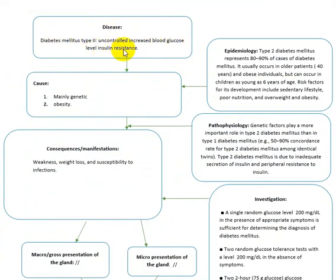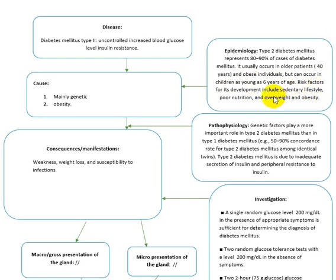Type 2 diabetes is an uncontrolled blood glucose due to insulin resistance. It is mainly genetic and can be associated with obesity. The epidemiology shows it represents 80 to 90% of diabetes cases, usually occurring in older patients — 40 years and above — and obese individuals, but it can also occur in children from age 6 years onwards. Risk factors include sedentary lifestyle.